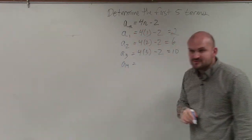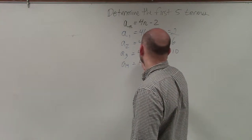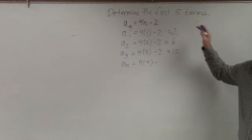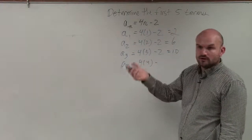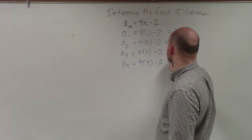a_4: 4 times 4 is 16 minus 2 is? Do we always use 1, 2, 3, 4, 5 terms? Well, the question is saying determine the first five terms. So you're going to plug in 1, 2, 3, 4, and 5, which would be the first five terms. 4 times 4 is 16 minus 2 is 14.